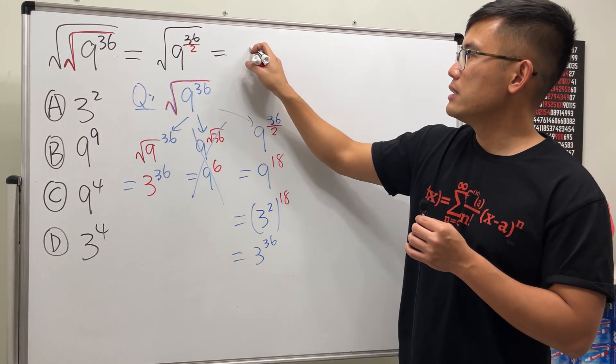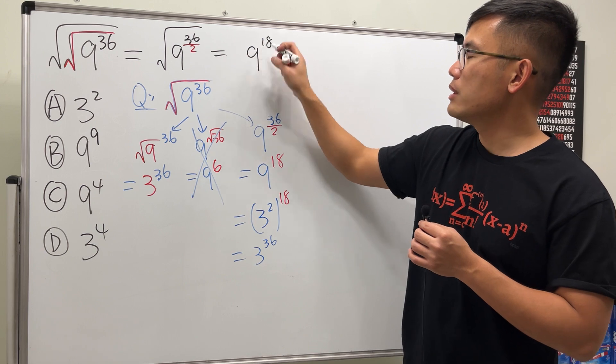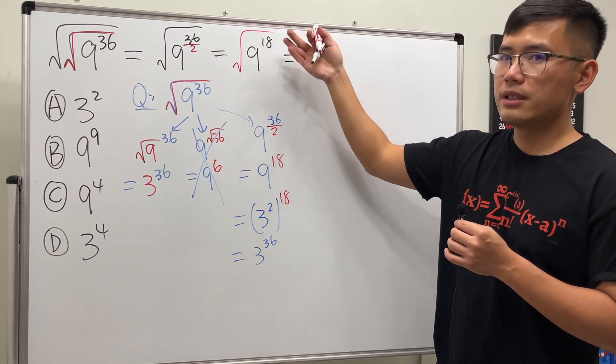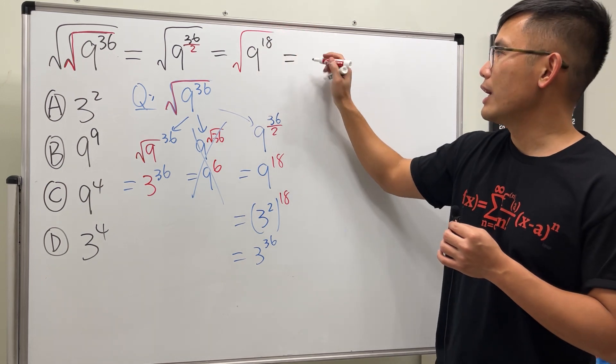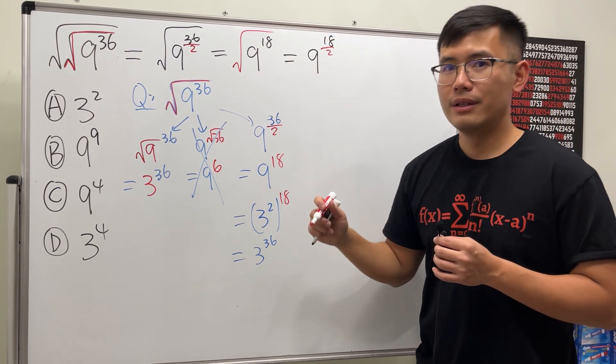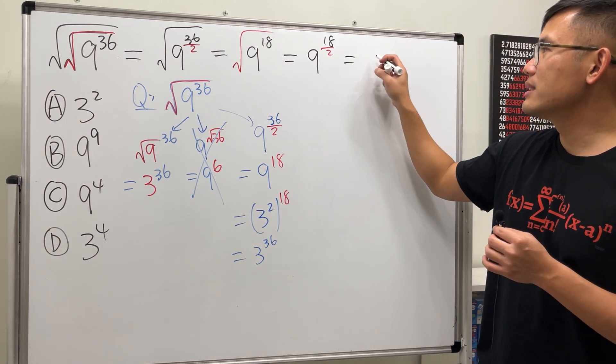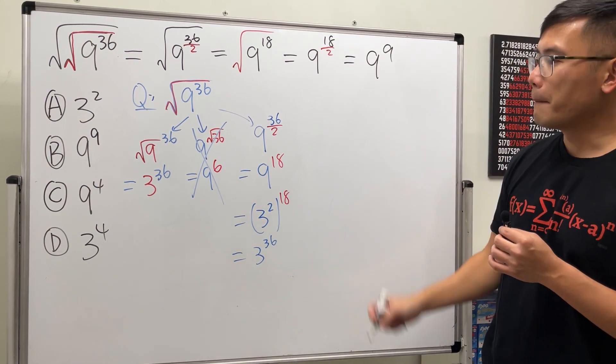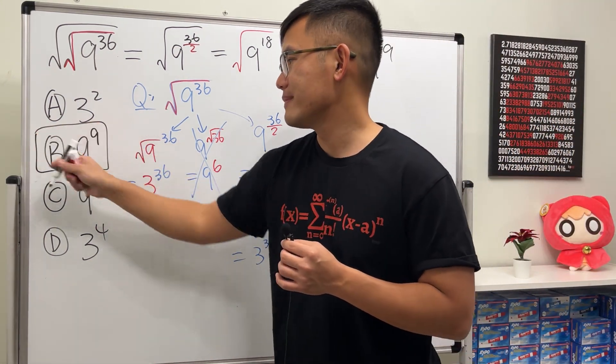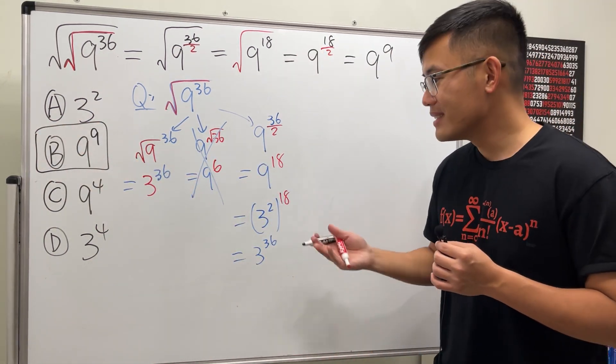36 divided by 2 is 18, so we have 9 to the 18th power. And then we have that square root, and this square root tells us to divide the 18 by 2. So we have 9 to the 18 over 2 power. So all together, we get 9 to the 9th power. Therefore, the answer is B. That's it!